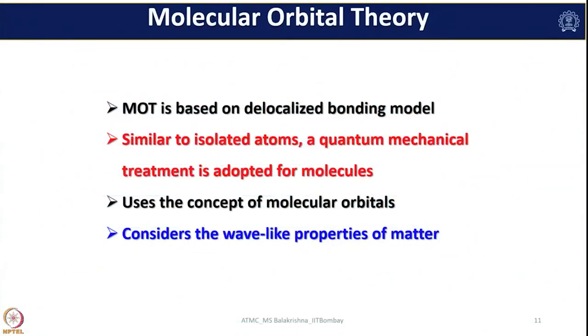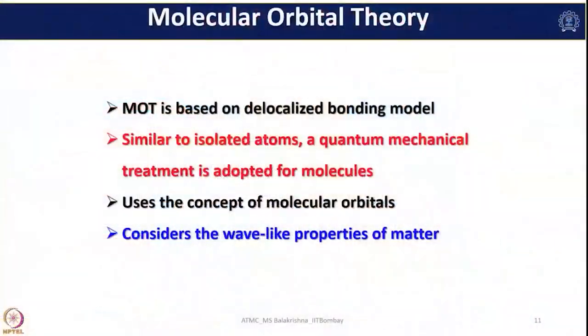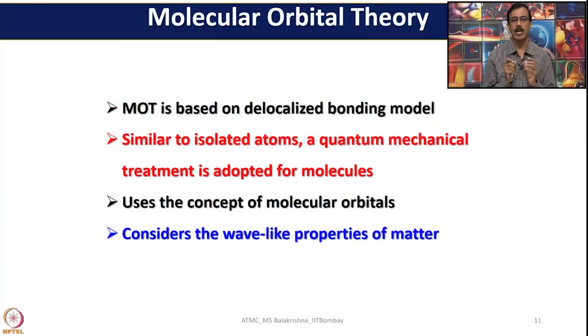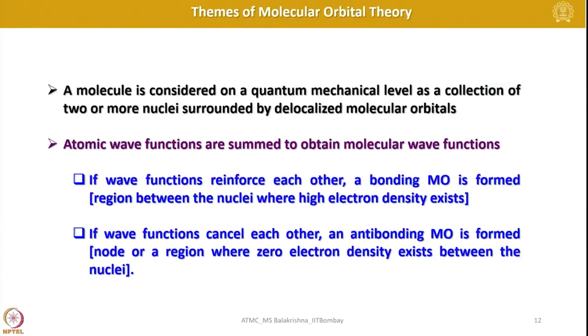Now let us come to molecular orbital theory. As I mentioned, ligand field theory has embedded the best parts of valence bond theory, crystal field theory, and Mulliken's molecular orbital theory. Before I introduce ligand field theory in detail, I want to make you familiar with molecular orbital theory so that understanding ligand field theory will be easier. Molecular orbital theory is based on a delocalized bonding model, unlike valence bond theory. Similar to isolated atoms, a quantum mechanical treatment is adopted for molecules, using the concept of molecular orbitals and considering the wave-like properties of matter. A molecule is considered on a quantum mechanical level as a collection of two or more nuclei surrounded by delocalized molecular orbitals.